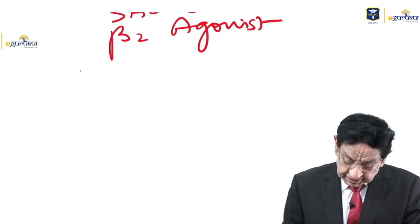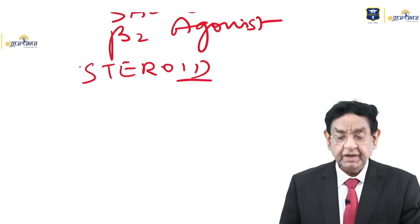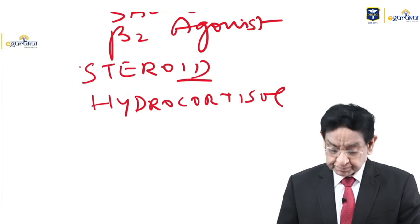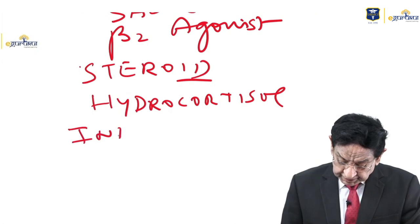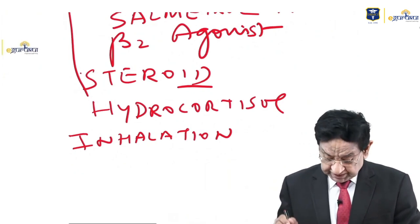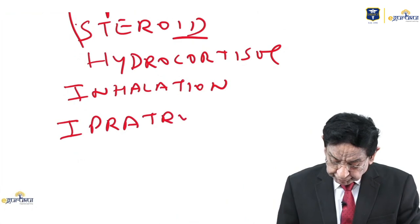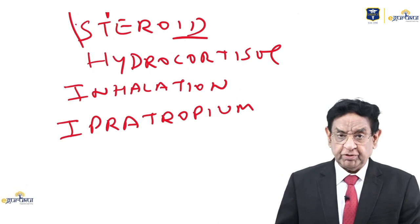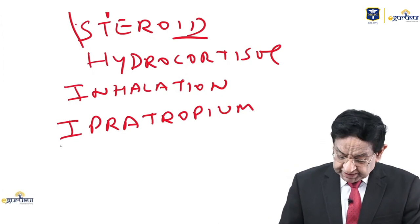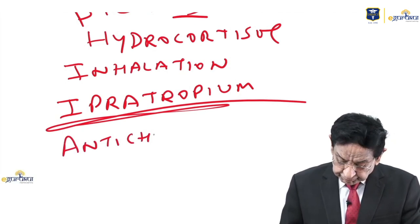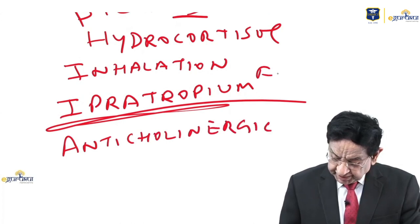Other drugs used in acute asthma attacks include steroids — hydrocortisone is commonly used — and steroids can also be used by inhalation. Beta-2 agonists can be used via nebulizer. Ipratropium bromide is also used in asthma and COPD. The mechanism of action of ipratropium bromide is that it is an anticholinergic drug — this is a frequently asked question.